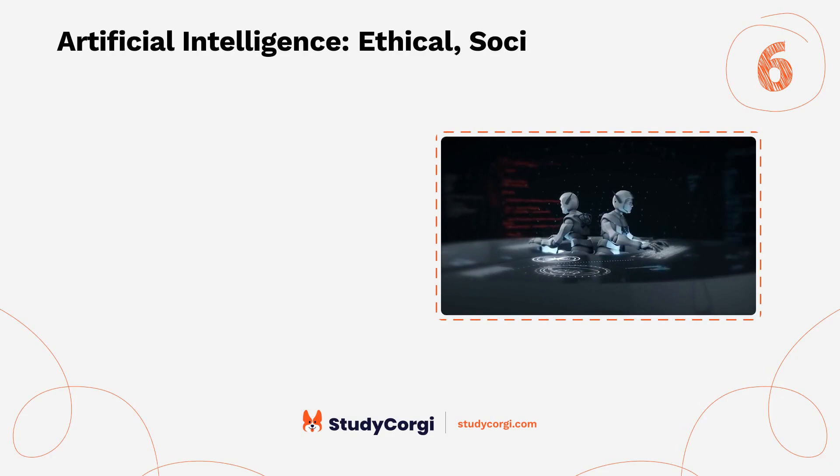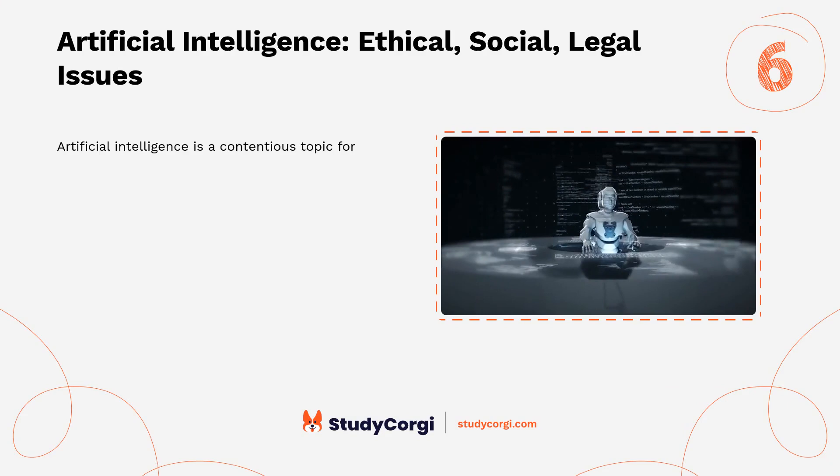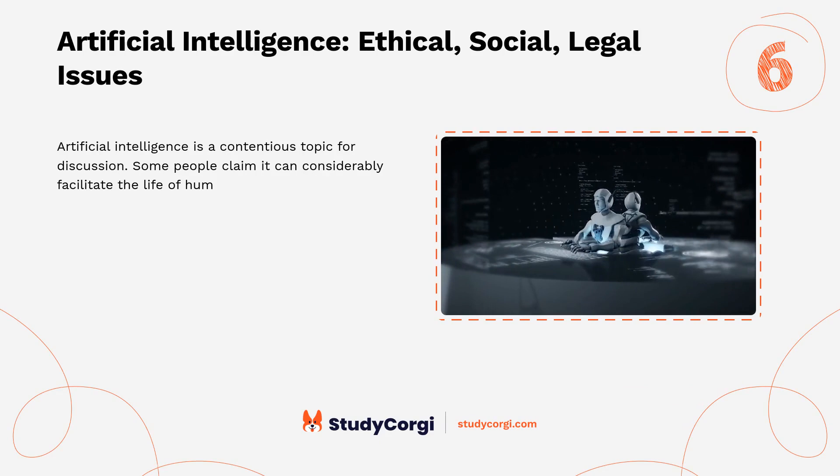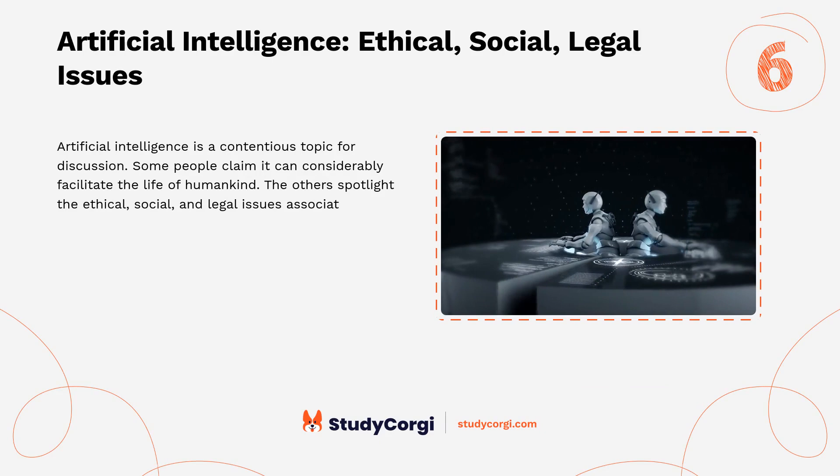Artificial intelligence: ethical, social, and legal issues. Artificial intelligence is a contentious topic for discussion. Some people claim it can considerably facilitate the life of humankind; others spotlight the ethical, social, and legal issues associated with this technology. Try to research these issues in your paper — are they as disturbing as some people assert?